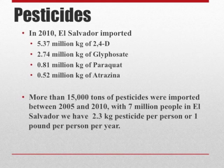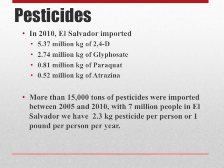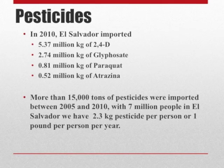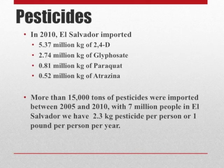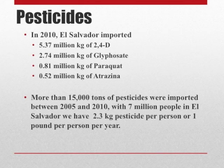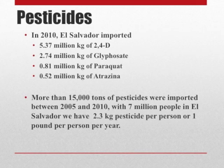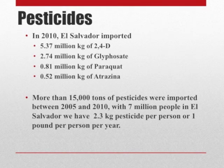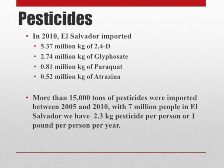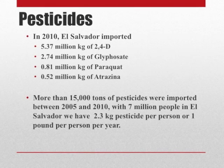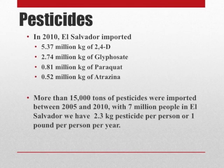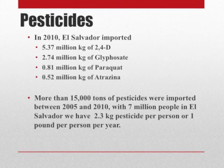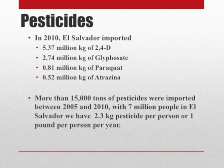Looking carefully at each of these possible causes — for example, pesticides. In 2010 in El Salvador, the country imported more than 5 million kilograms of 2,4-D, almost 3 million kilograms of glyphosate, almost 1 million kilograms of paraquat, and about half a million kilograms of atrazine. Considering the period between 2005 and 2010, the country imported about 15,000 tons of pesticides. With only 7 million people, that is 2.3 kilograms of pesticide per person for that period, or about one pound per person per year.